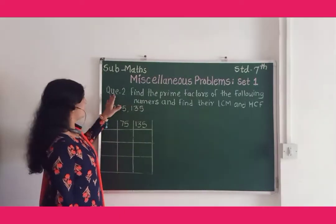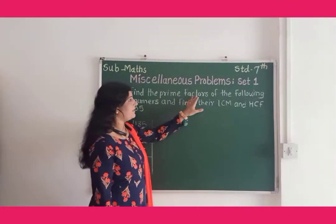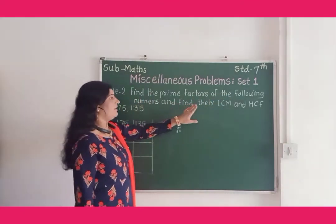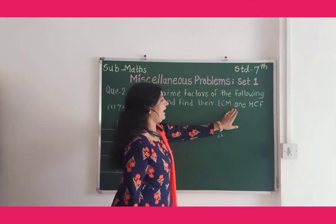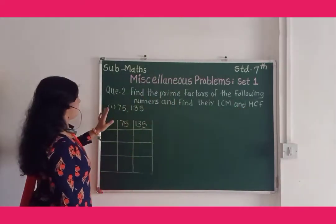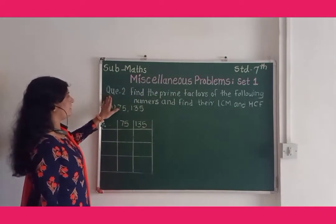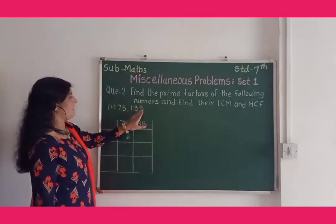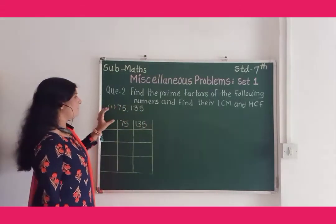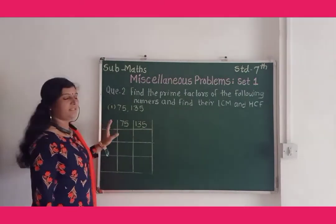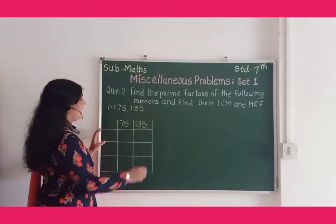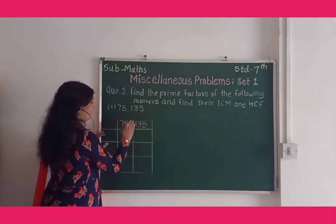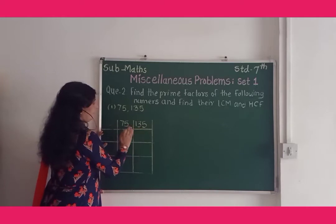Second question: find the prime factors of the following numbers and find their LCM and HCF. We take the first example from this question: 75 and 135. We solve this example by vertical arrangement. Write these two numbers, 75 and 135, in one line.